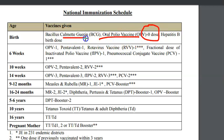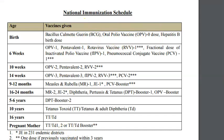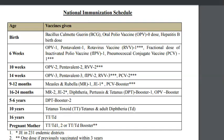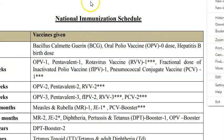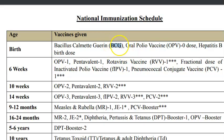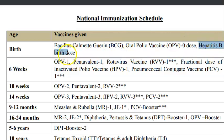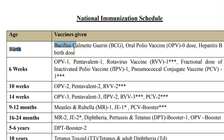BCG stands for Bacillus Calmette-Guérin — remember the spelling: G-U-E-R-I-N — and it protects against very severe forms of tuberculosis only. At birth, three things are given: BCG (intradermal), oral polio vaccine zero dose, and hepatitis B birth dose.